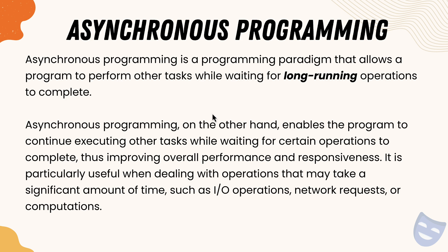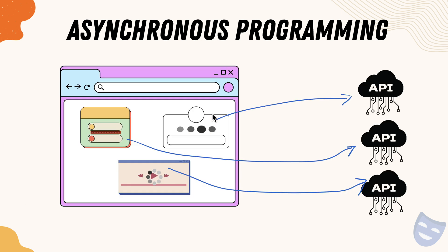So what is asynchronous programming? It is a programming paradigm that allows a program to perform other tasks while waiting for a long-running operation to complete. If you have a program that takes quite a long time to execute, you can't block other faster tasks. In a real-world web page, multiple widgets may call different APIs and some may be slower. You can't block the whole web page or hang the whole website because of one slow widget — that would make the user experience terrible. To make all these operations seamless, we need asynchronous programming.